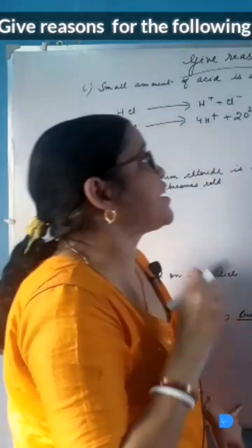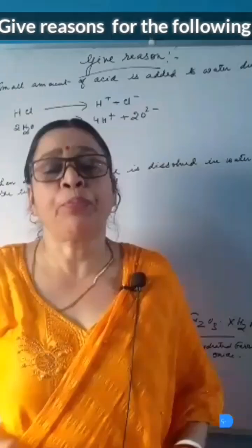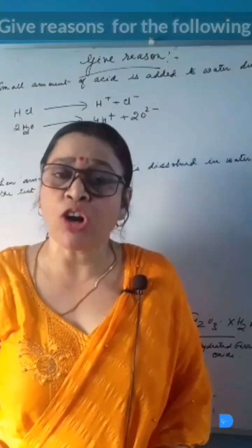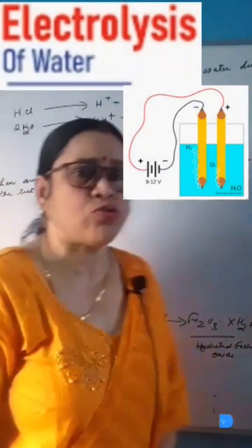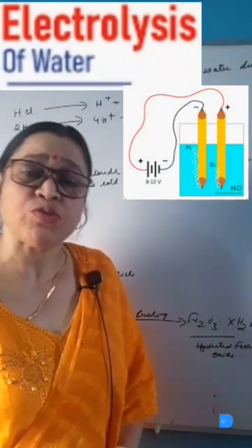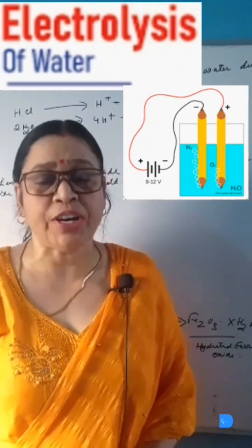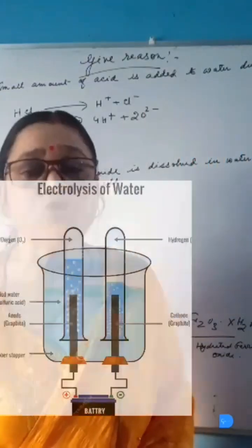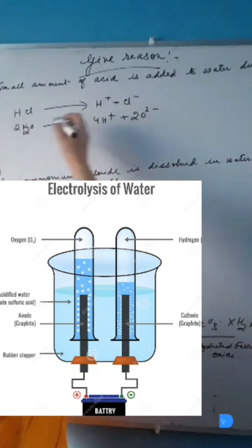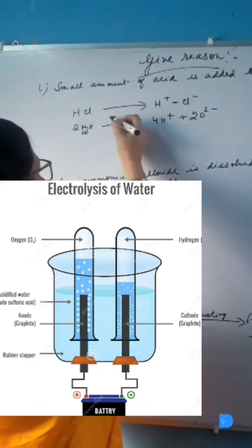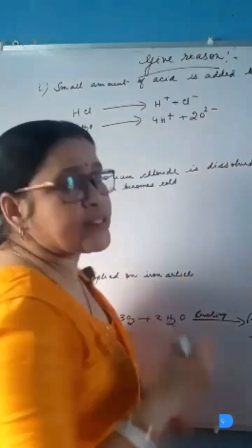A small amount of acid is added to water during electrolysis. Pure water is not a good conductor of electricity because water is a covalent compound. So, when a small amount of acid is added to it, the acid dissociates to produce oppositely charged ions. For example, hydrochloric acid will produce hydrogen ions plus chloride ions.